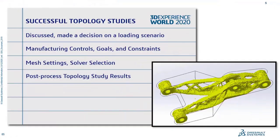What can you do with this part? Many things. I could export it to an STL file and 3D print it. I could also export it to a mesh body file and use it as a guideline to remodel the lower A-arm with sketches and features to try and match the general shape of my topology-optimized part. It's really up to you to decide what you want to do once you have this final geometry. Wrapping up successful topology studies: I discussed the thought process on using a single loading condition, made decisions on manufacturing controls, optimization goals, and constraints, used a draft quality mesh with an appropriate element size for at least three elements across any preserved region, used the Intel Direct Sparse Solver, and reviewed topology study results including material mass plots, smooth mesh plots, and underlying stress and displacement plots.